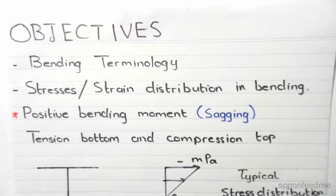First of all, we have positive bending moments. These are positive bending moments due to bending, and then we have sagging. Since it's positive sagging, we have tension at the bottom and compression at the top.